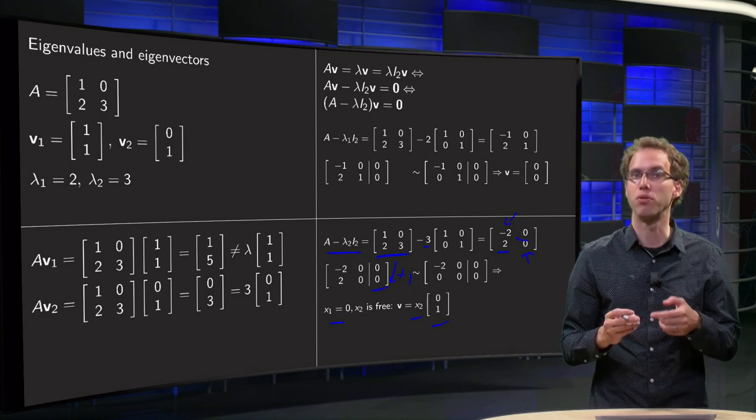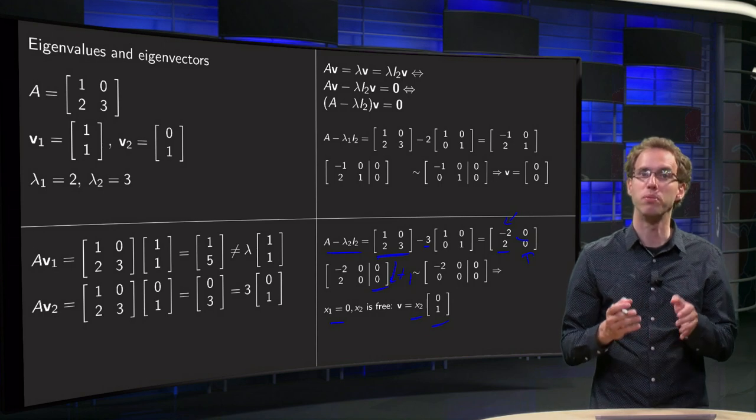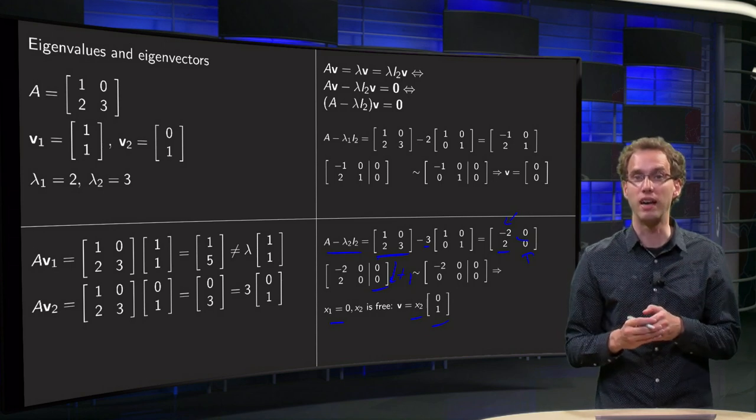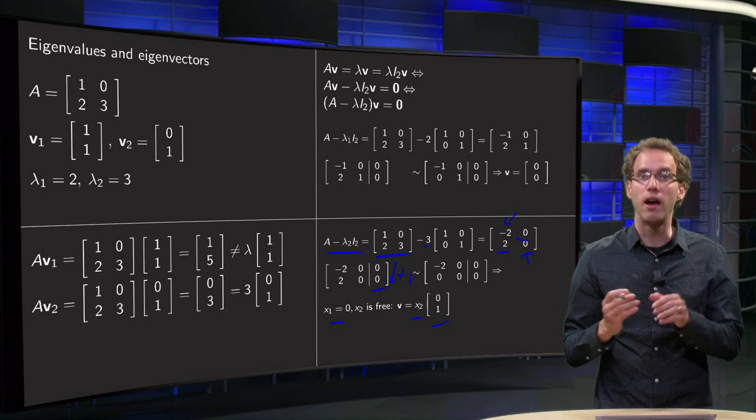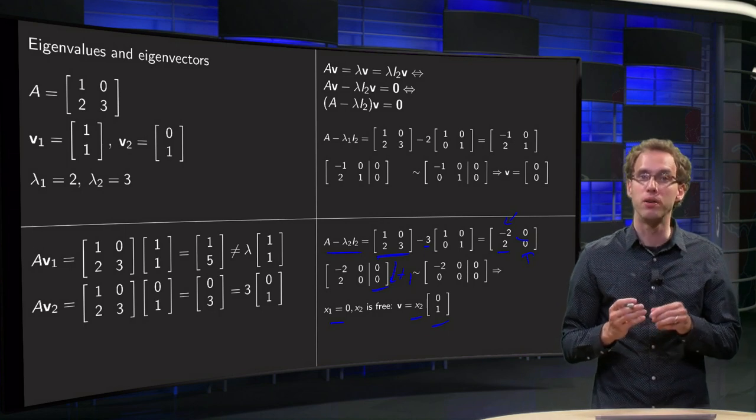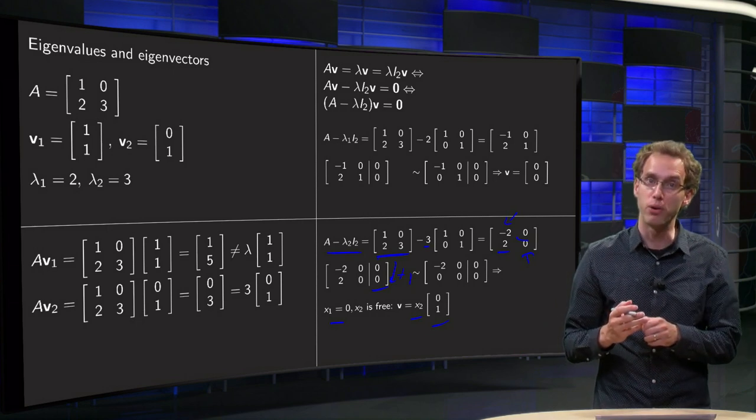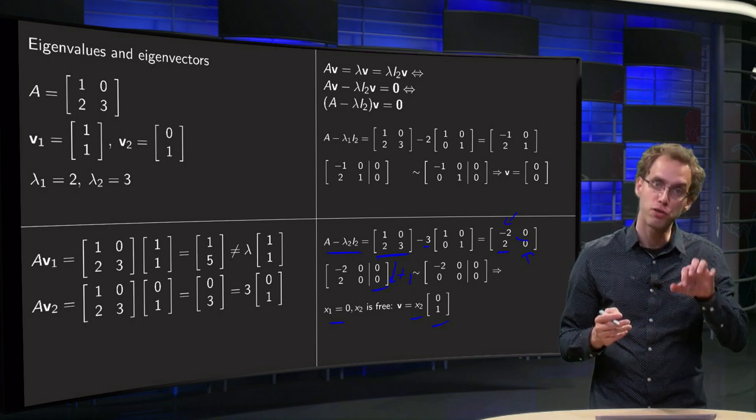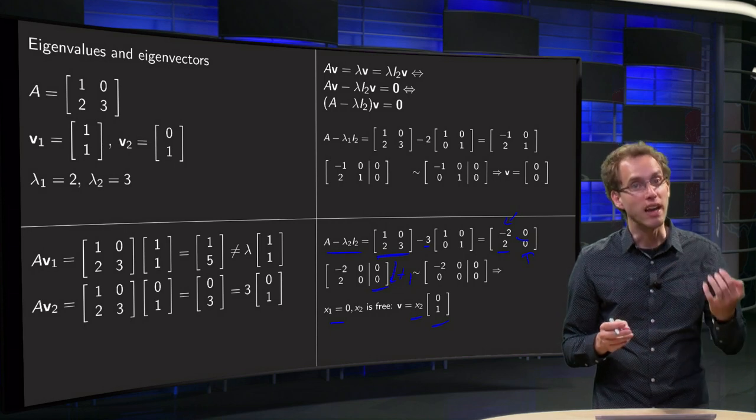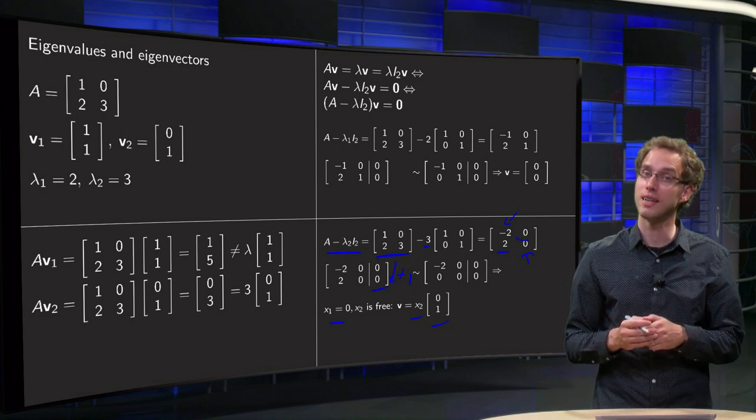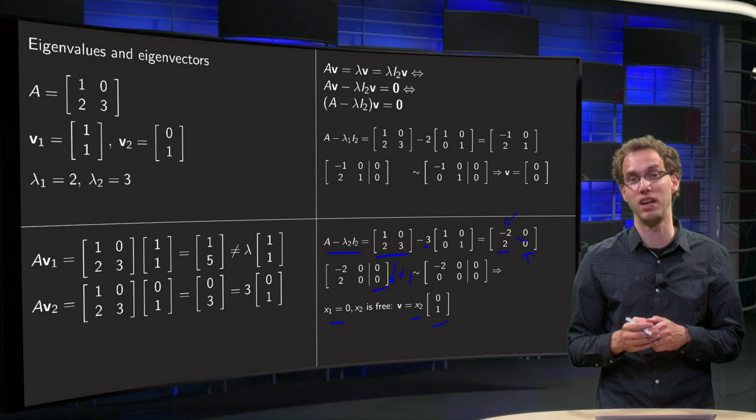Well, all multiples except of course for 0 times [0; 1] because the zero vector cannot be an eigenvector. So now you know, given any number, you can determine whether it is an eigenvalue or not. And from the first part you saw, given any vector, you can determine whether it is an eigenvector of the matrix A or not.